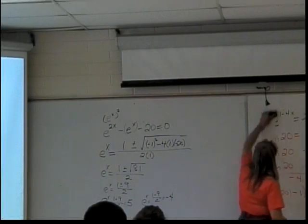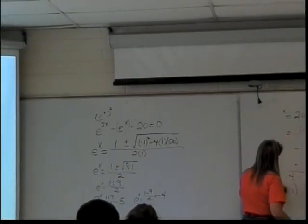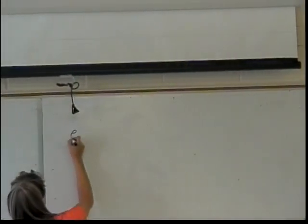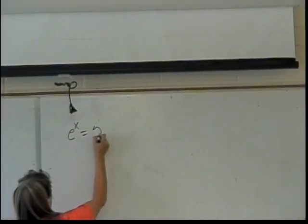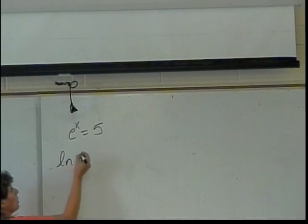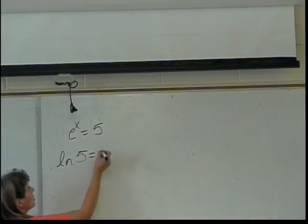Well, that shouldn't be so bad. Let's start with the first one. I have e to the x equals 5. This should look easy now. I can change that so that I'll have x equals a number. How do I change it? ln 5. Right, I change the logarithmic form. That'll be the natural log of 5 equals x.